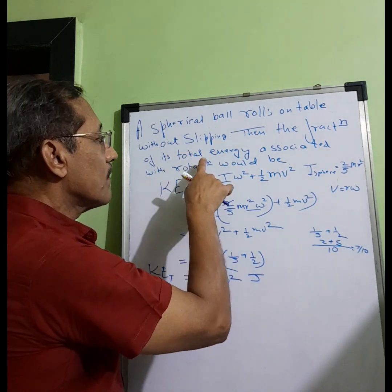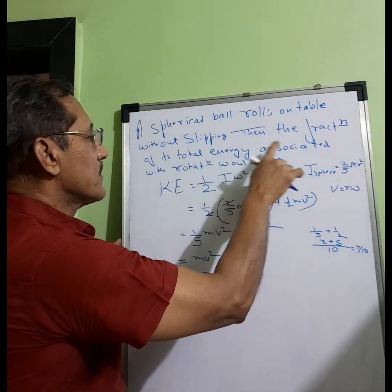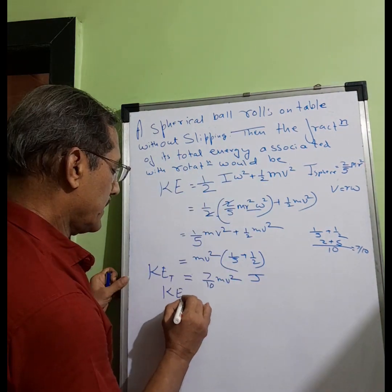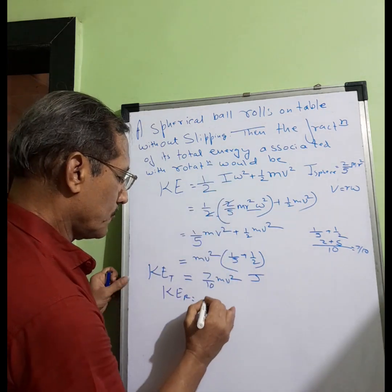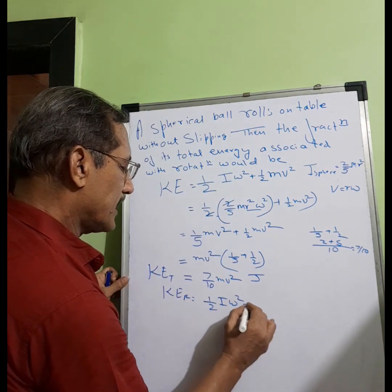Then the fraction of total energy, this is total energy, associated with rotational would be... So let me find out KE rotational. Now it is this formula which I will be using: 1/2 I omega².